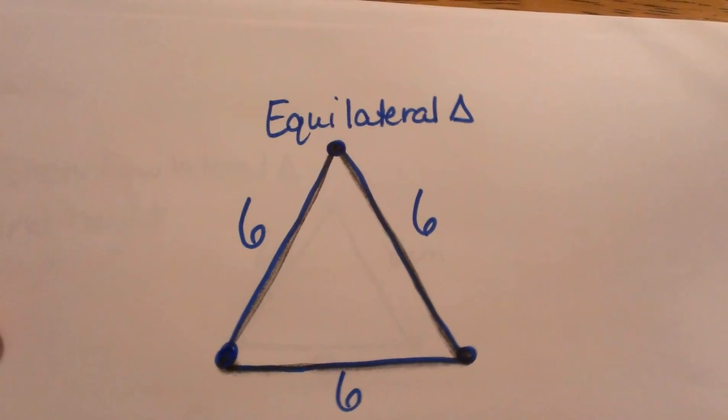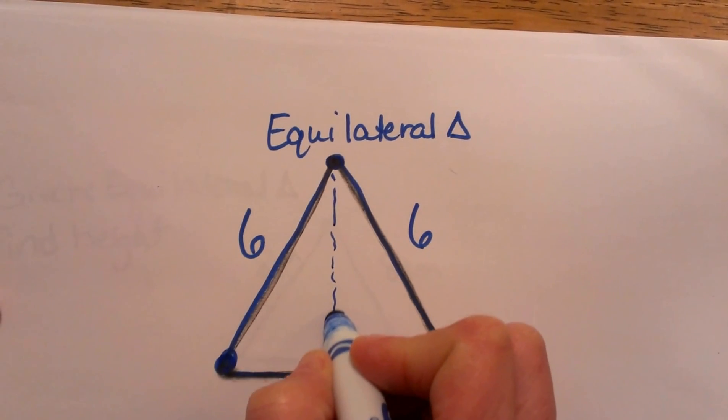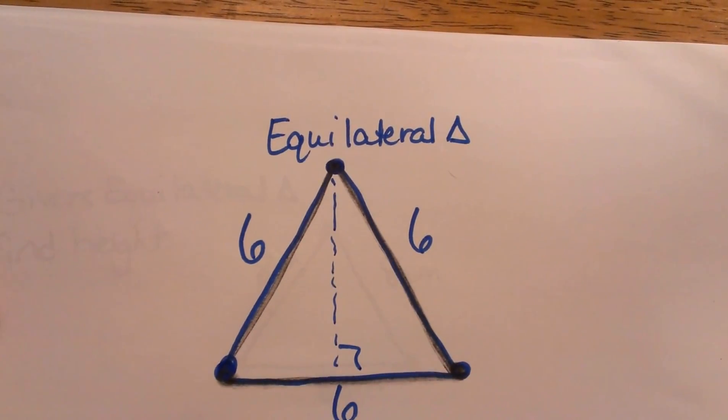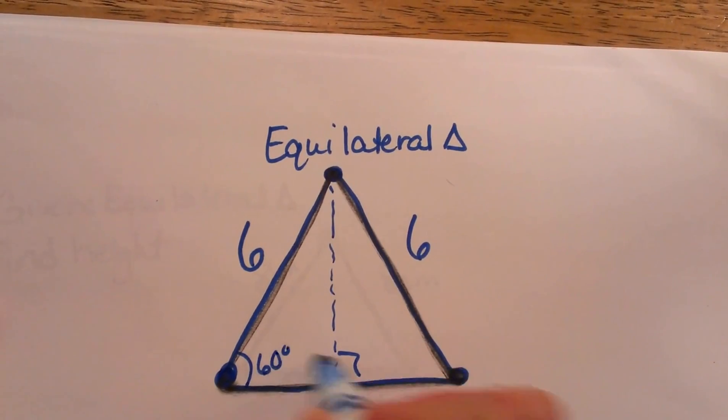We are given an equilateral triangle and we are going to try to find the height. So I am going to draw in the height and if you know, in an equilateral triangle all the angles are 60 degrees.